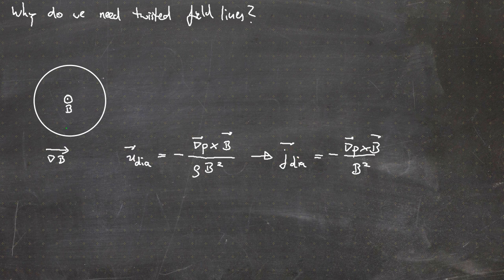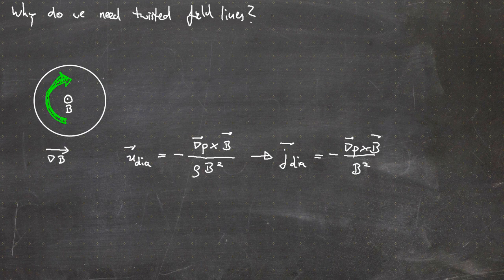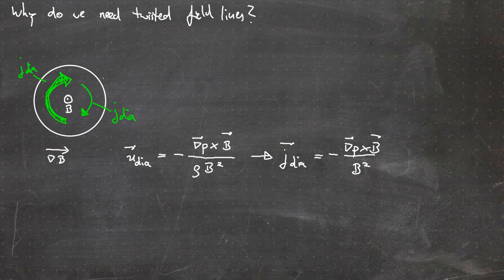The diamagnetic current depends on the inverse of the squared magnetic field, so it is larger on the outboard side. The current J_dia is stronger on the outboard side than on the inboard side, indicated here by a thicker arrow on one side and a thinner arrow on the other. This asymmetric current would lead to charge separation.